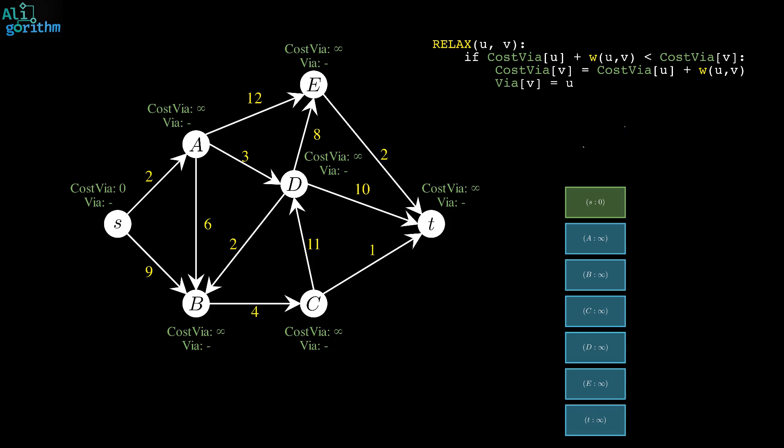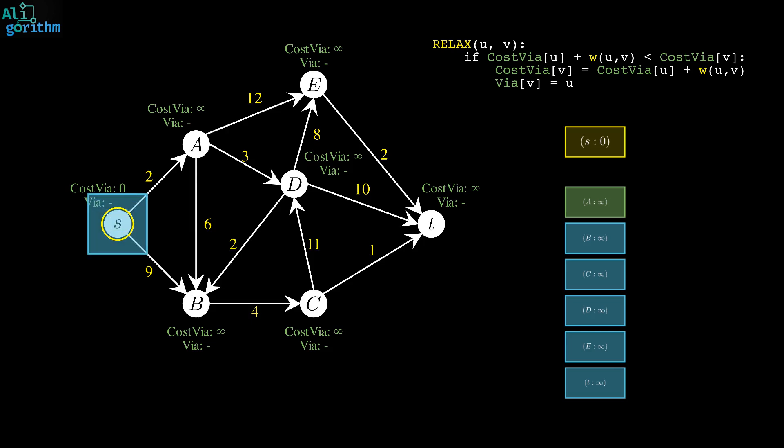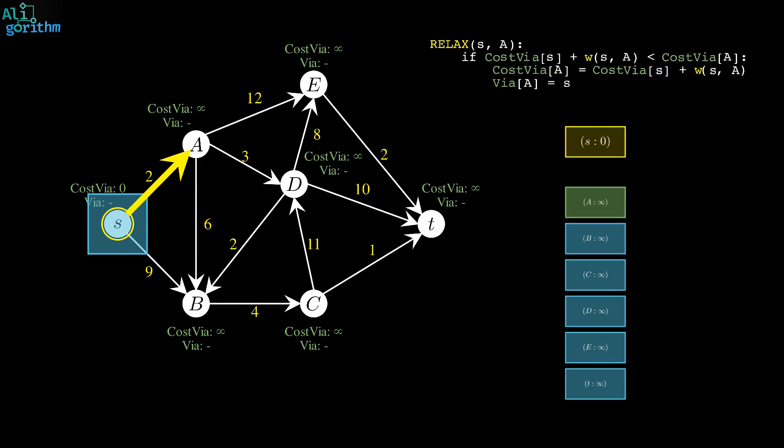Now, the algorithm begins by extracting elements from the heap. In the first iteration, the element with the minimum cost is S. The algorithm processes S and adds it to the blue area, indicating that its distance is now known. Next, the algorithm applies the RELAX procedure on the edges outgoing from S. For instance, starting with the edge S A, it updates A's via and cost via values, and decreases its cost in the heap to reflect these updated values. After processing S A, it moves to the edge S B and does the same.